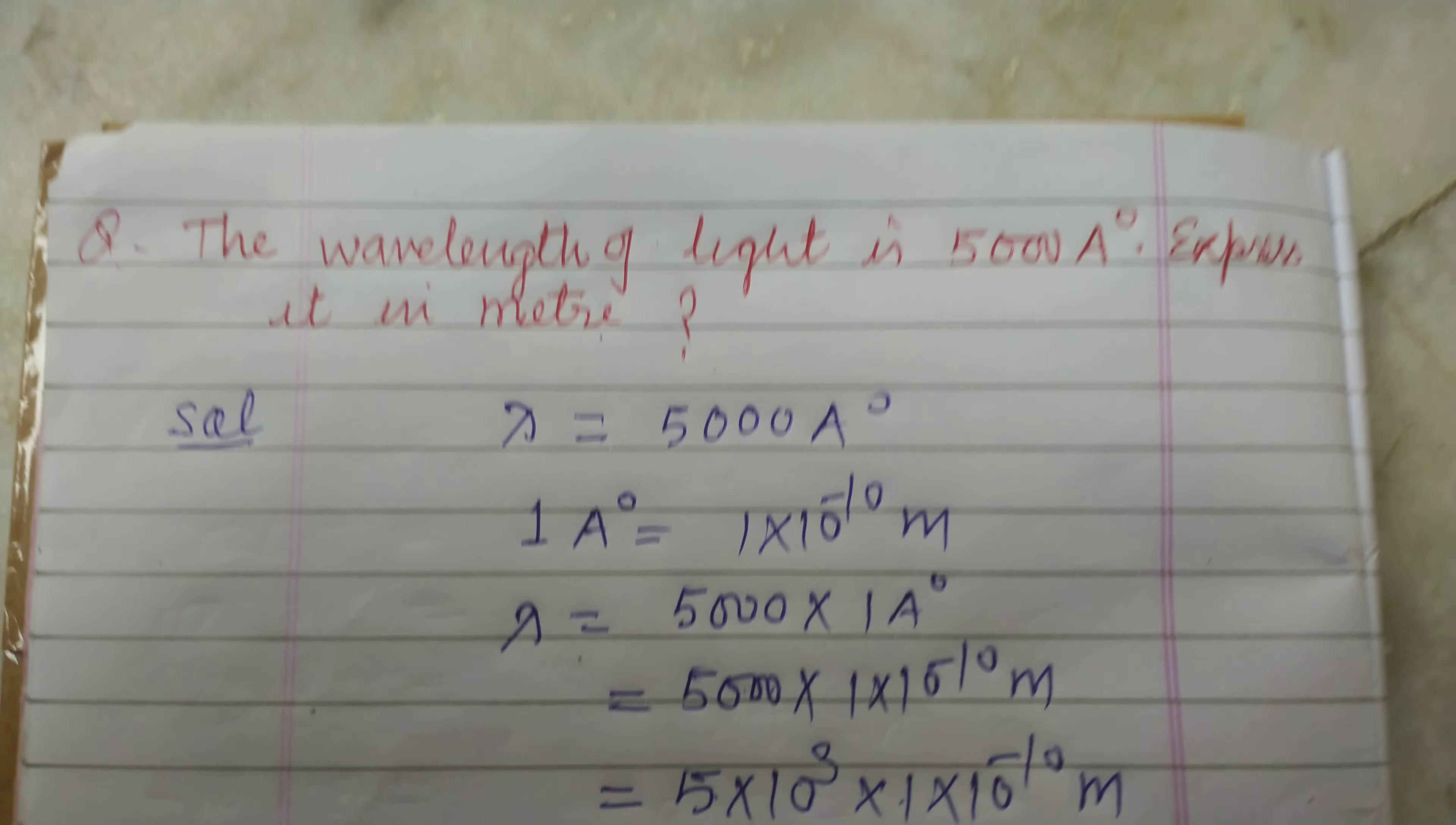It is equal to 5 into 10 to the power minus 7 meter. So student answer of this question is 5 into 10 to the power minus 7 meter.